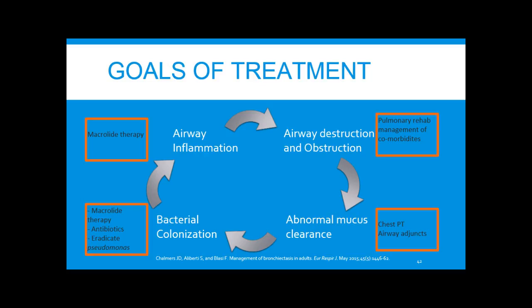Returning to the vicious cycle, the goals of management — unless there's an underlying cause that's curative or treatable — focus on four areas: airway inflammation, managed with macrolide therapy; obstruction, addressed with pulmonary rehab and managing comorbidities; abnormal mucus clearance, addressed with chest PT and airway adjuncts; and bacterial colonization, managed with antibiotics.